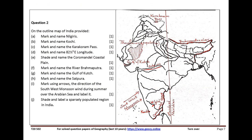Question 2. On the outline map of India provided, mark and name Nilgiris, mark and name Kochi, mark and name the Karakoram Pass, mark and name 82½ degree east longitude, shade and name the Coromandel Coastal Plain, mark and name the river Brahmaputra, mark and name the Gulf of Kutch, mark and name the Satpura, mark using arrows the direction of the southwest monsoon wind during summer over the Arabian Sea and label it, shade and label a sparsely populated region in India.